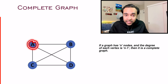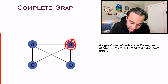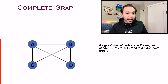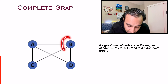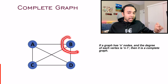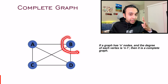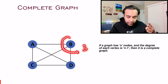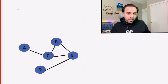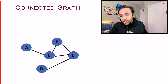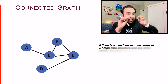Next we have a complete graph. The property of a complete graph is that each node is directly connected to all other nodes. Node A is directly connected to nodes B, C, and D; similarly node B is connected to A, C, and D. For a graph to be complete, the degree of each node must equal the number of vertices minus one. This graph has four vertices, so each node should have a degree of three — and that is why we call it a complete graph.